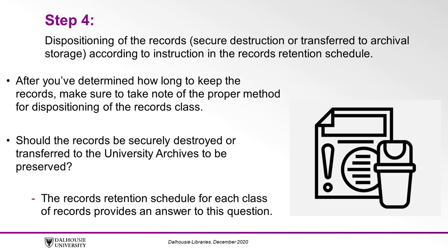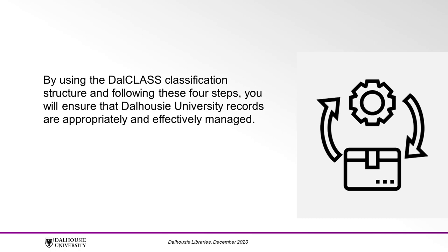Step 4: Dispositioning of the records — the secure destruction or transfer to archival storage — according to instruction in the records retention schedule. The appropriate records retention schedule will also provide instructions for properly dispositioning records. After you've determined how long to keep the records in Step 3, make sure to take note of the proper method for dispositioning the records class. Should the records be securely destroyed or transferred to the University Archives to be preserved? The records retention schedule for each class of records provides an answer to this question.